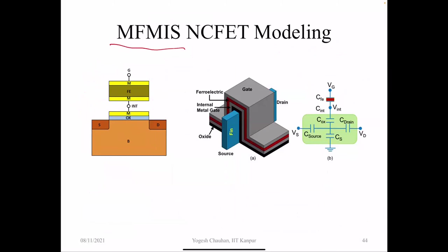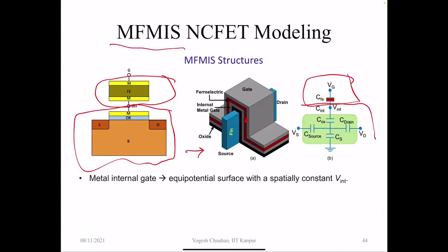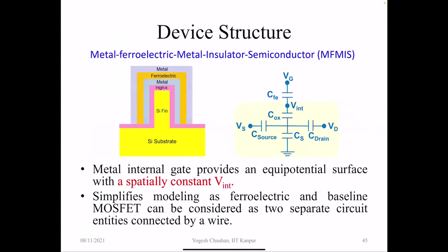When we started understanding how NCFETs operate and what the characteristics look like, we first started with MFMIS because it's simple: we have the MOSFET and add a ferroelectric in series. This is a FinFET with the internal metal, which we can analyze separately and connect them. The internal metal gate provides a constant V_int — the voltage on the internal metal is constant — so the ferroelectric and the baseline MOSFET can be considered as two separate quantities, which helps in building a simplified model.